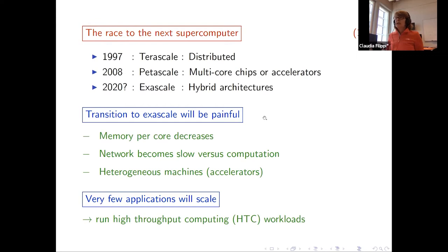Okay, so we are going to have hybrid architectures, accelerators, memory per core will decrease. In any case, with many cores, the network becomes a bottleneck compared to computation, there is latency between CPU and GPU. And so what one can expect is that relatively few applications will scale. And in any case, these computers will have to be used also in a high-throughput mode, so when you're running not just a single run on the whole computer, but lots of computations in parallel.